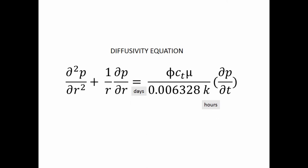Remember, for the diffusivity equation, 0.006328 is measured for days, while 0.000264 is measured for hours.